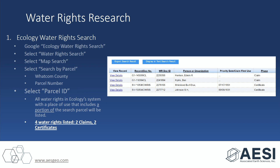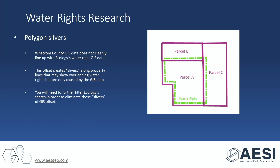Here's the tricky part: Whatcom County's GIS data doesn't cleanly line up with the Ecology water rights GIS data. Parcel A is the exact same shape as the water rights shown in green, but they're not exactly lined up — they should, but they don't. So in a general search, a water right should be pulled up on parcel A, but parcel B and parcel C will also pull up that water right. We have to do an additional search to weed out those overlaps — we call them slivers — and eliminate that GIS overlap.